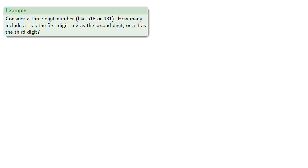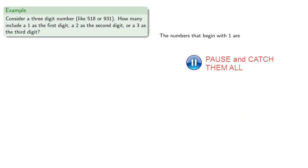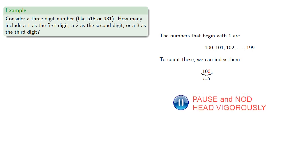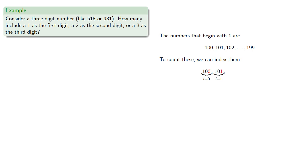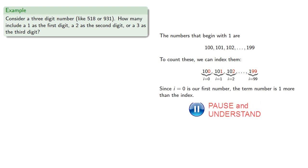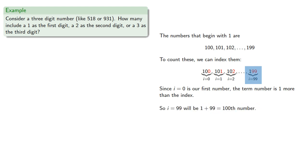We can start with the numbers that begin with 1. To count these, we index them using the last digit. So 100 is i equals 0, 101 is i equals 1, and so on. Since i equals 0 is our first number, the term number is one more than the index. So our last term, i equals 99, will be the 100th number. So there are 100 numbers that begin with a 1.